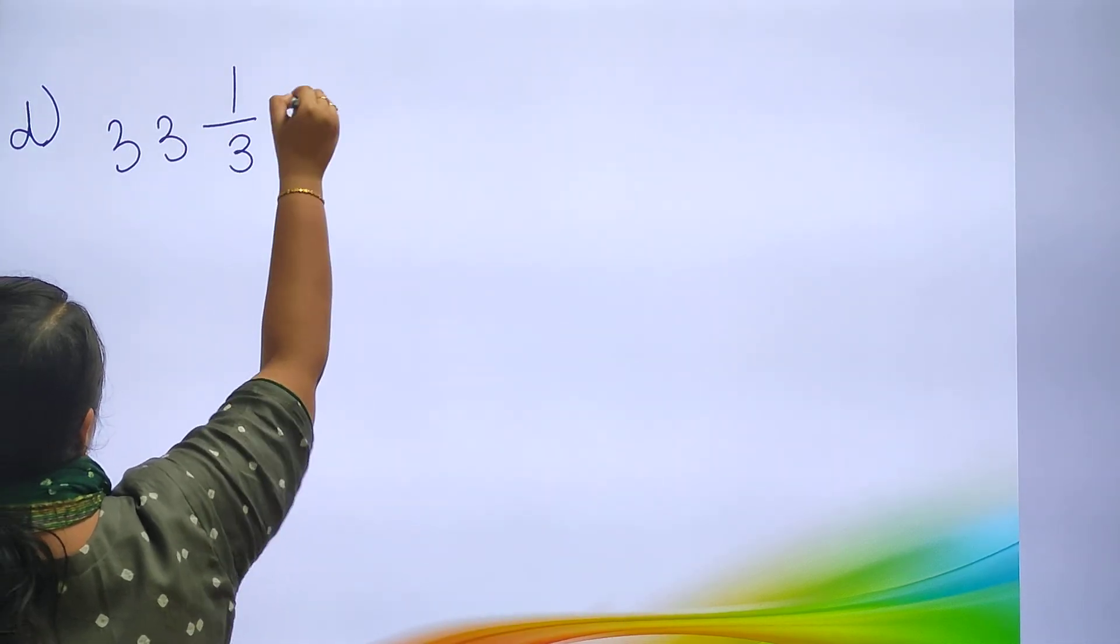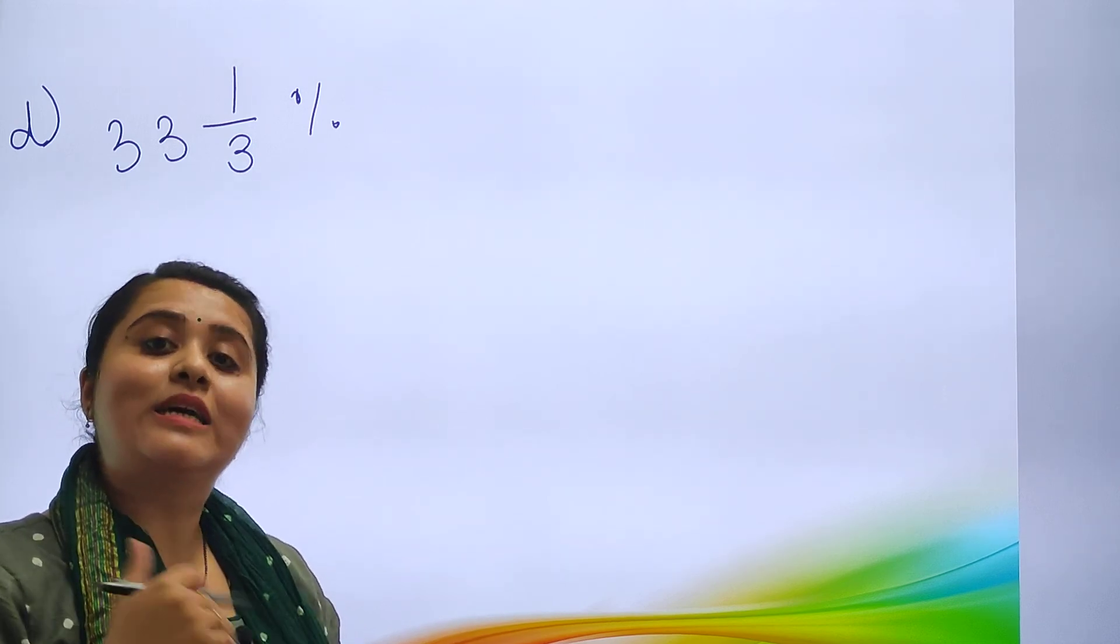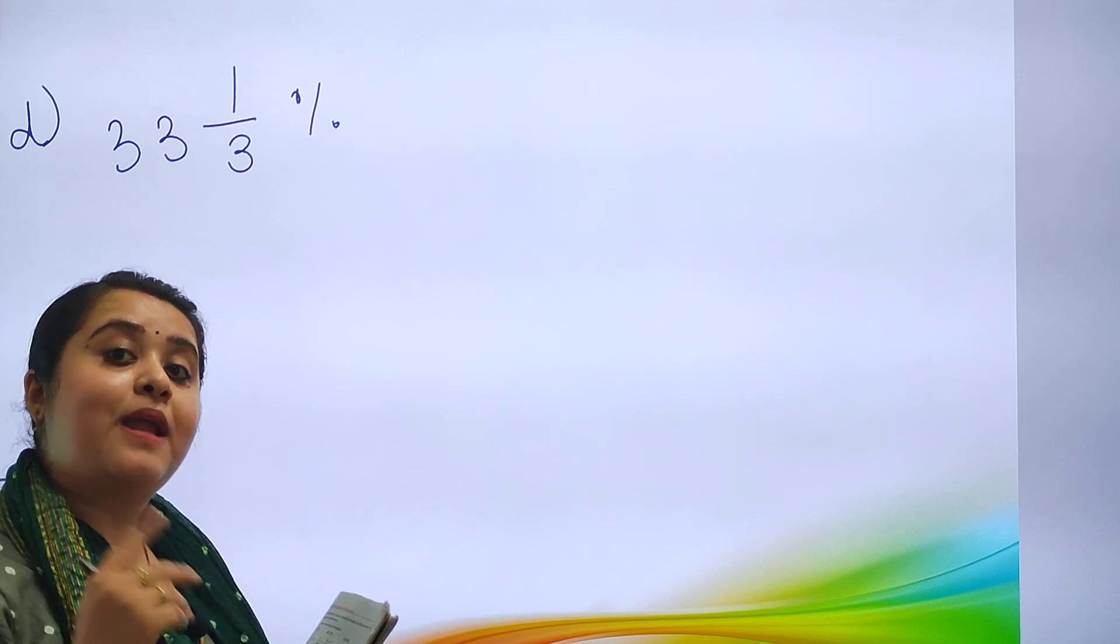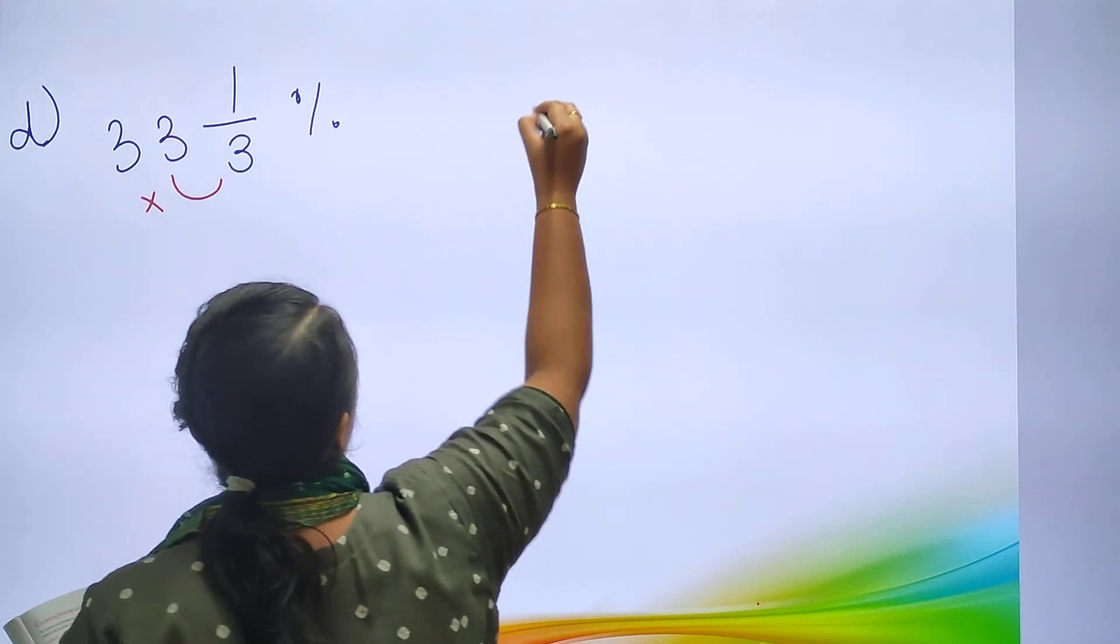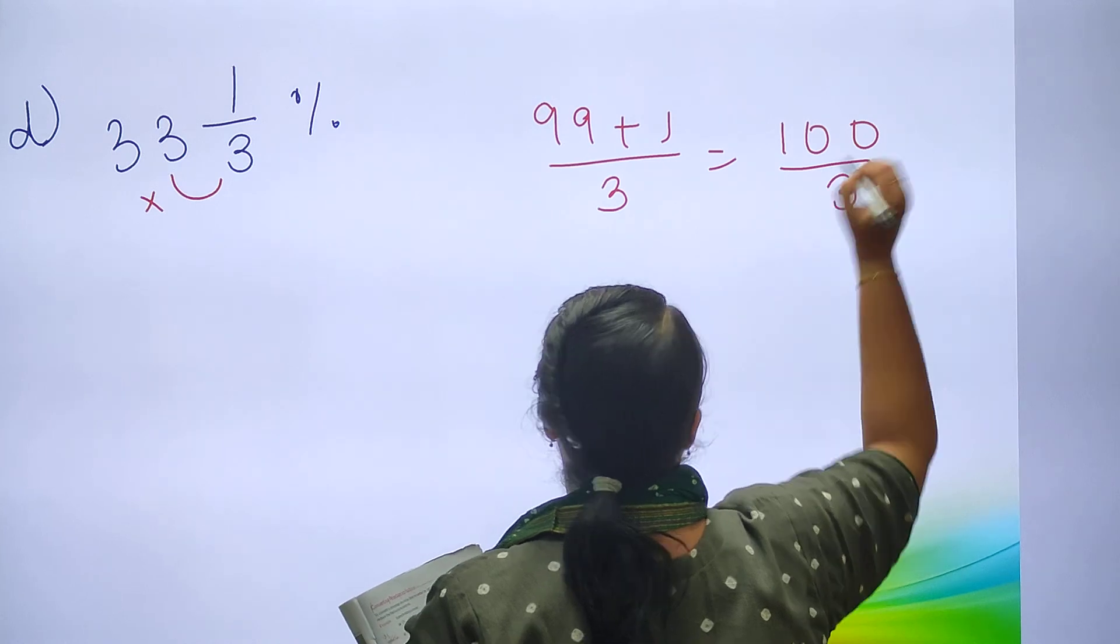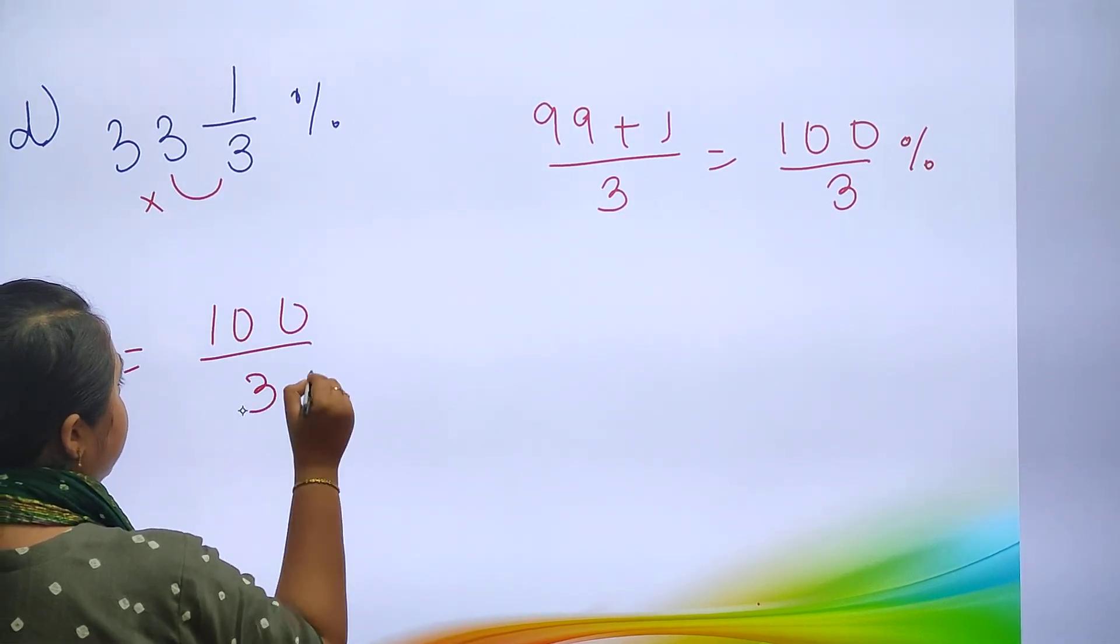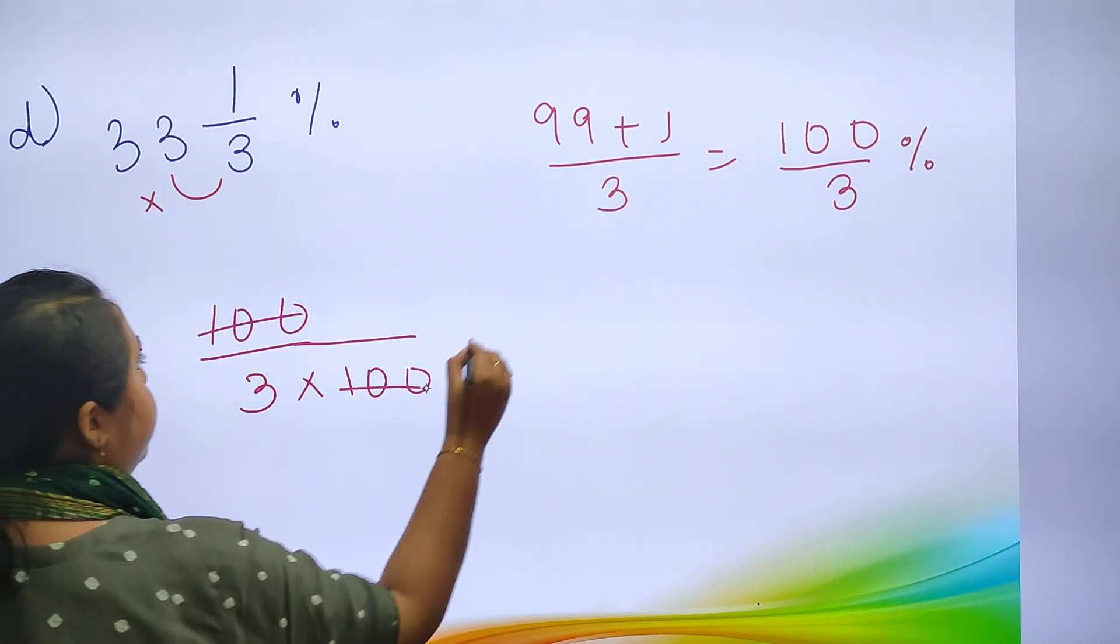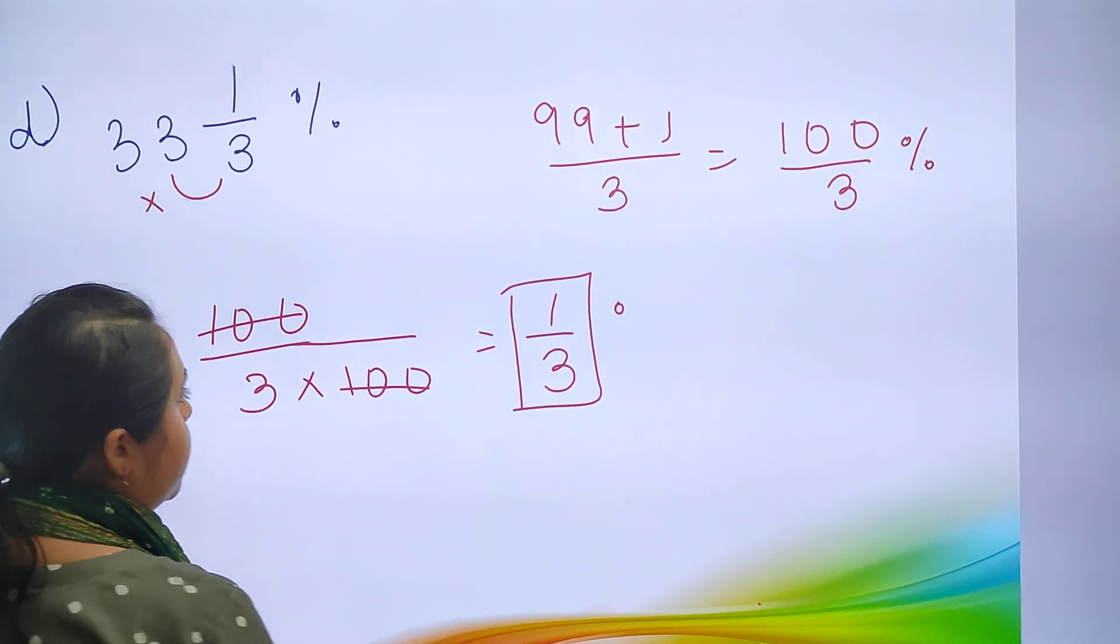33 and 1 upon 3 percent. How you will be solving this type of sums? It is in mixed fractions, so we will be converting it into normal fractions first. 3 into 33 is 99 plus 1, so your answer will be 100 upon 3. Now this 100 upon 3 will be divided with 100. So it becomes 100 upon 3 into 1 upon 100. This 100 cuts, so your answer will be 1 upon 3.